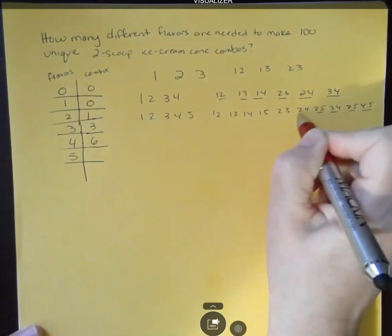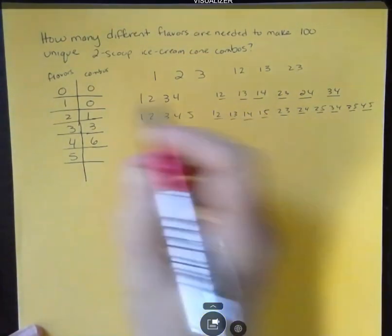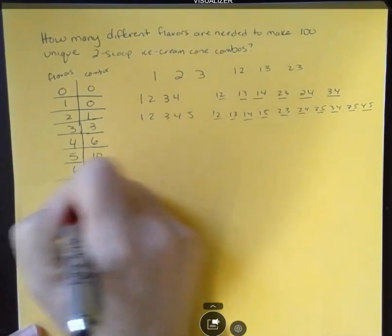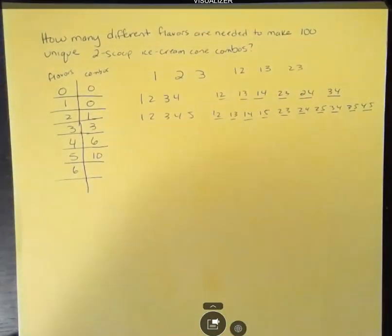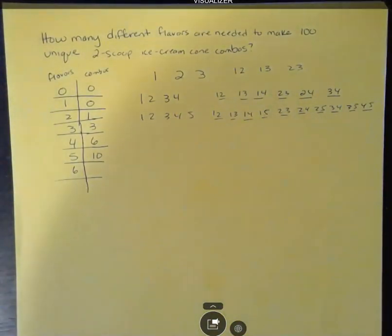One, two, three, four, five, six, seven, eight, nine, ten. Now I'm up to ten. What if I had six? Okay. I'm going to stop right there because I see a pattern and maybe you do or maybe you don't.